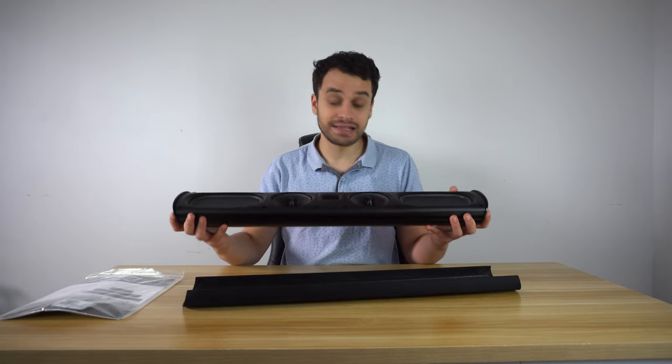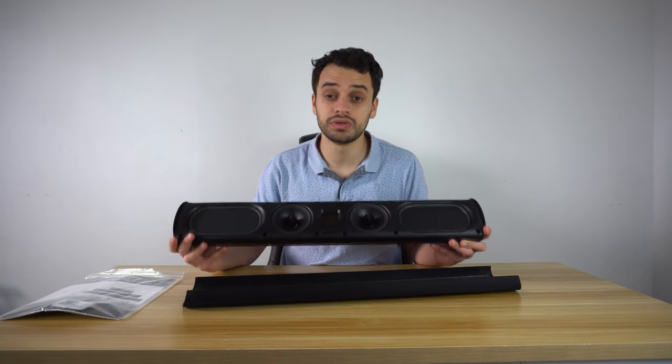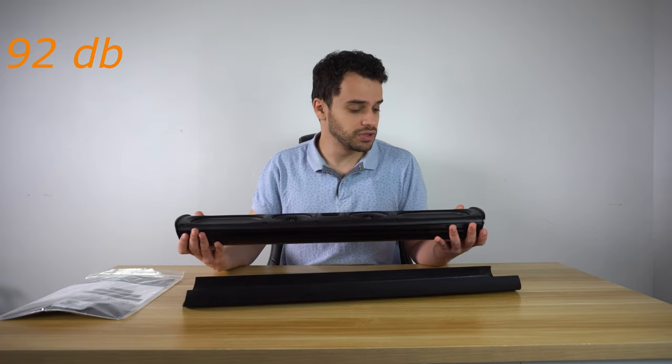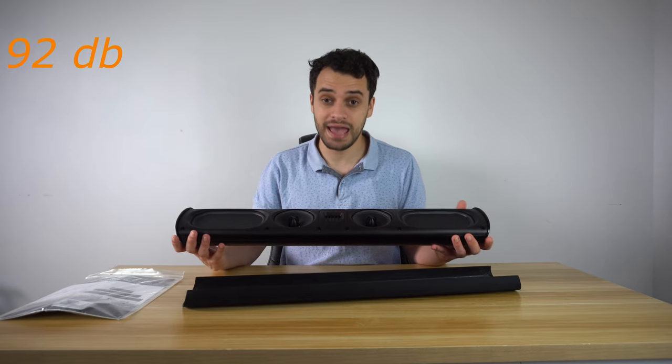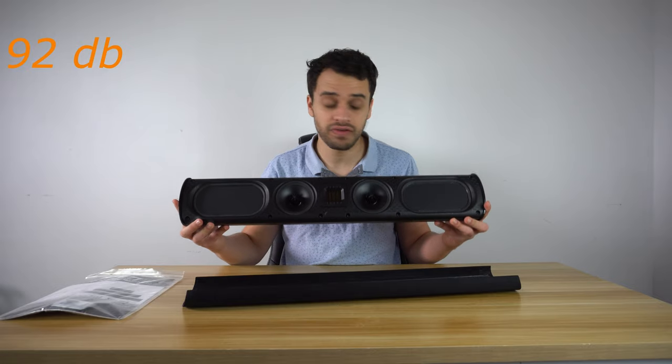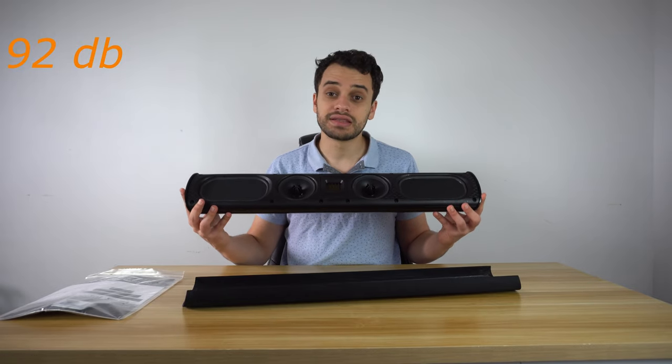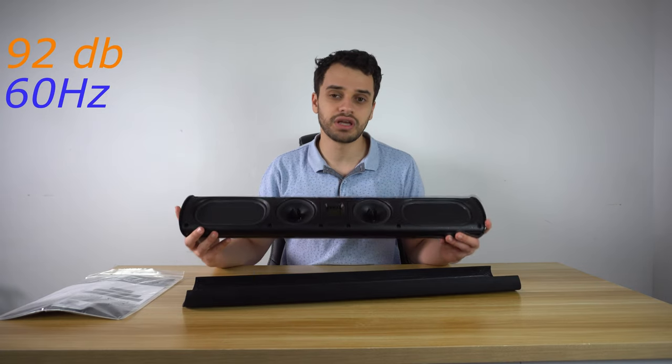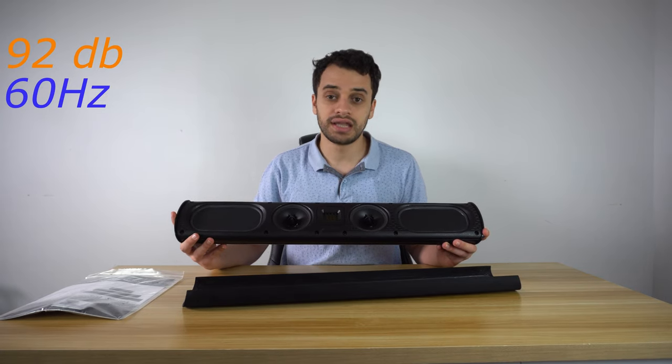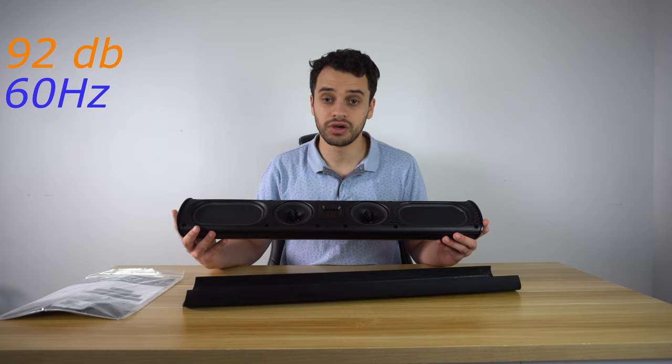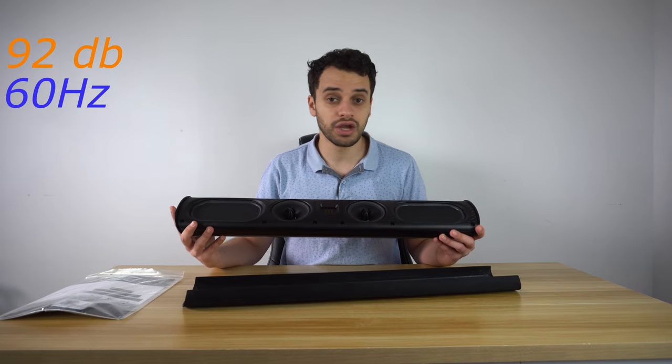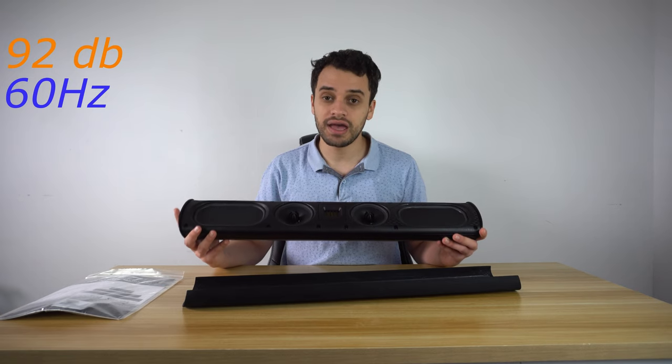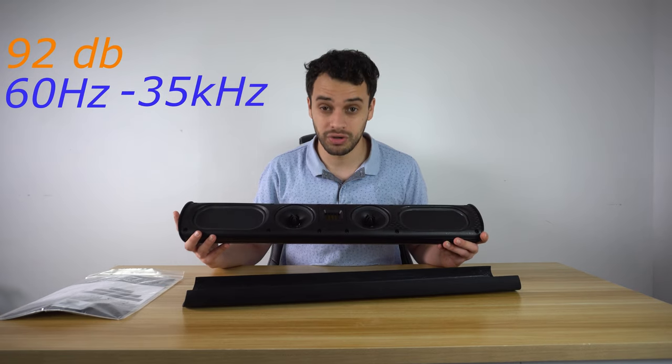Now, this one has a sensitivity level of 92 dB, which is pretty sensitive. So you could basically run it with any amp or AV receiver that you have. Not only that, it goes down to 60 Hz, which is plenty, especially if you are running it at crossover at 80 Hz, or if you have a subwoofer to take care of the low end.